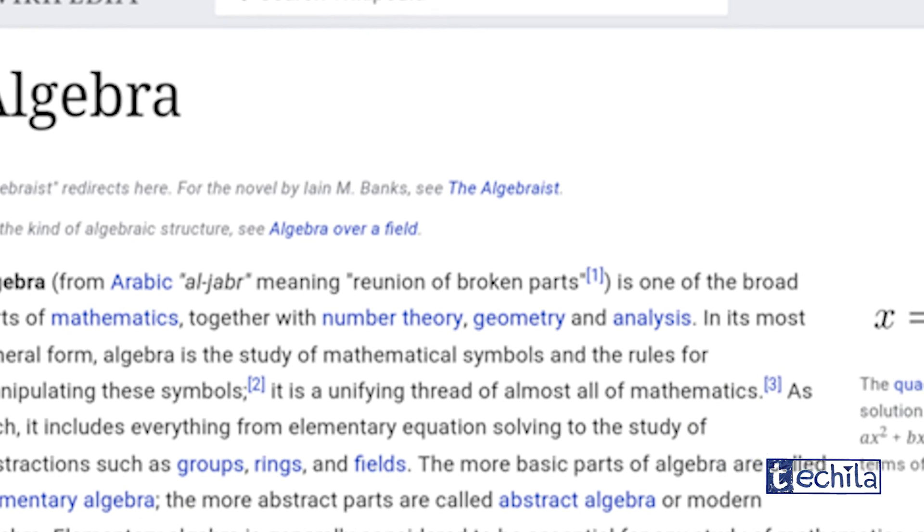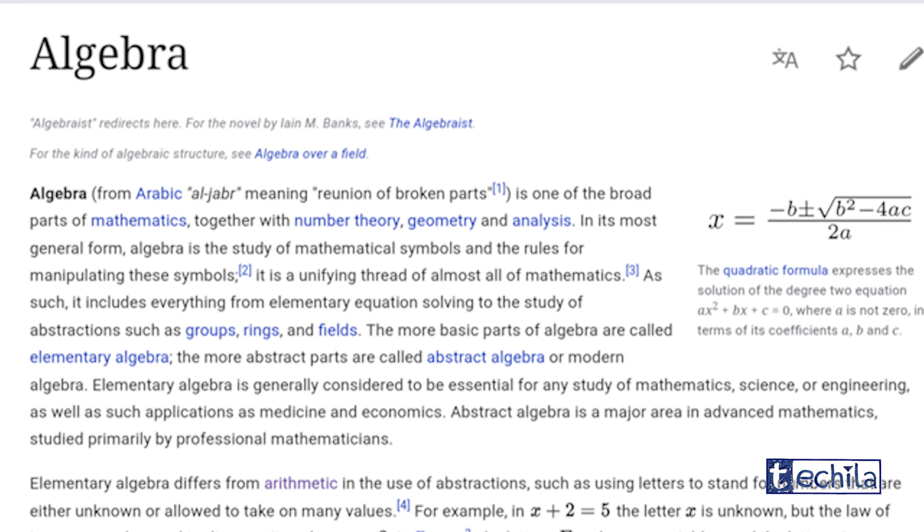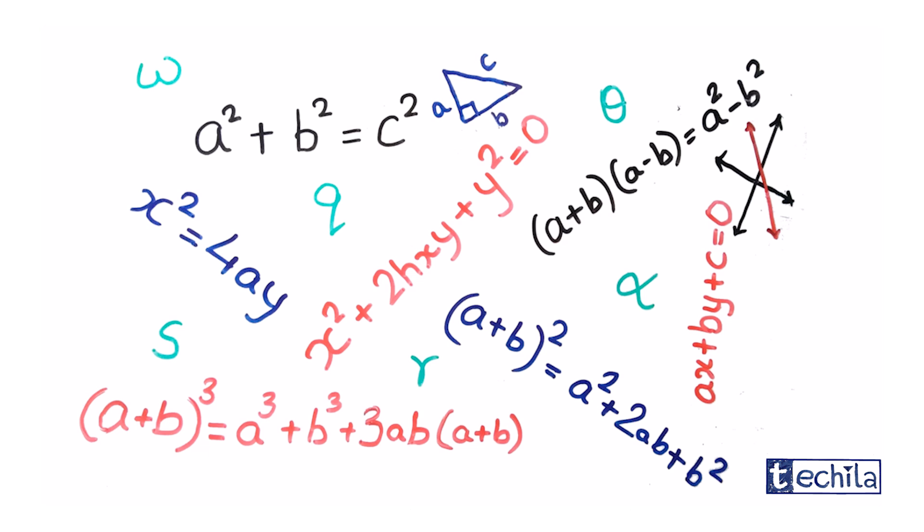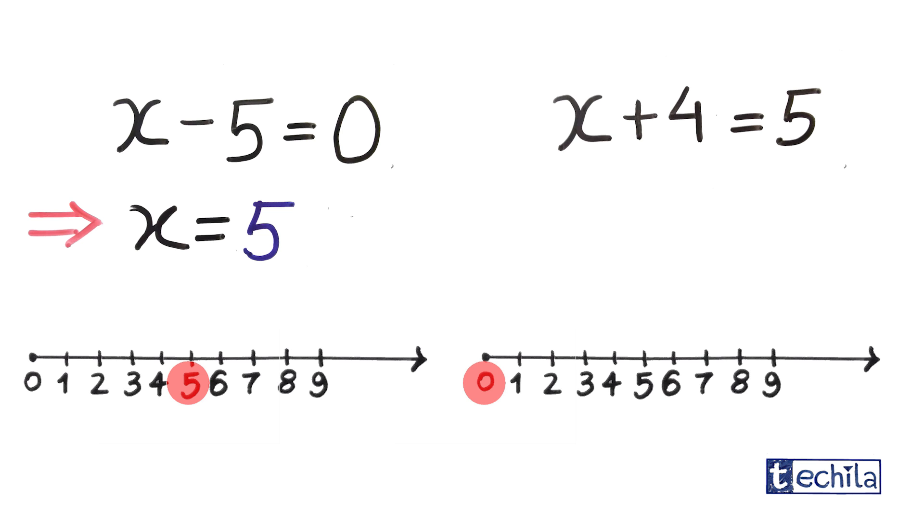With the advent of basic algebra dated back in 800 AD, mathematical interpretations got even simpler and use of alphabets became more common to represent variables and to determine the solution of various equations. Like we know, solution for equation x minus 5 equals 0 is 5 or solution for x plus 4 equals 5 is 1.